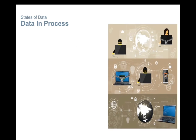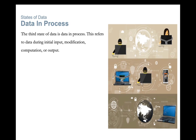The third state of data is data in process, which refers to data during initial input, modification, computation, and output. Protection of data integrity starts with the initial input of data. Organizations use several methods to collect data such as manual data entry, scanning forms, file uploads, and data collected from sensors, and each of these methods poses potential threats to data integrity.